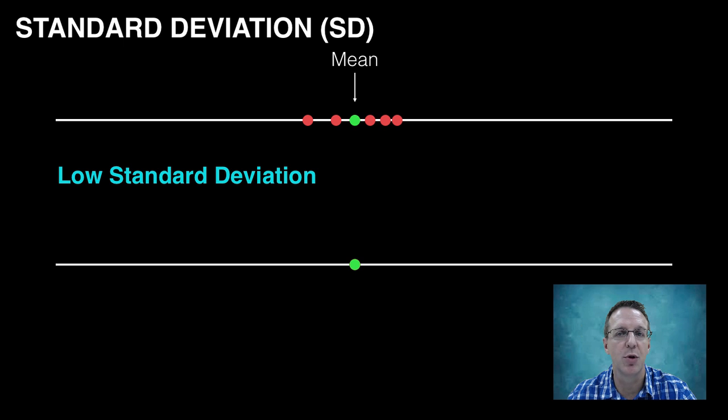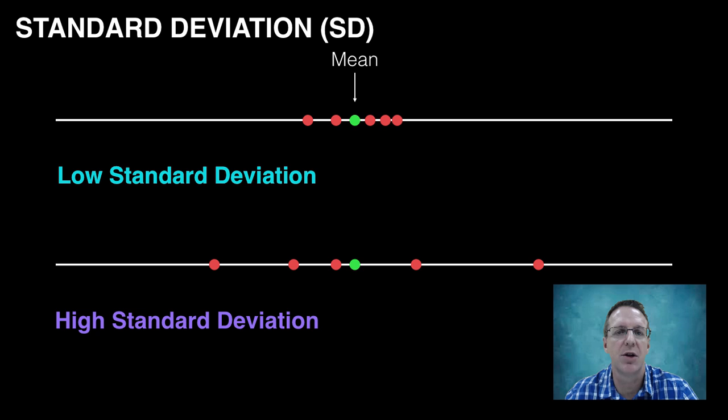that data set will have a very, very low standard deviation. Whereas, if the data points are scattered further from the mean, the data set is considered to have a large standard deviation.